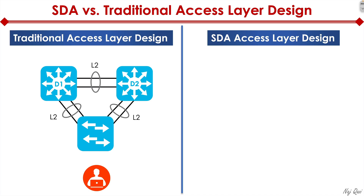Today, if you haven't been migrated to SDA yet, what you most likely have is a user connected to an access switch that is dual-homed into distribution layer switches via redundant links at Layer 2. The distribution layer switches might also be connected with each other at Layer 2, and the rings on top of the redundant links represent EtherChannels, so we can bond all the links together and take full advantage of the combined port throughput.